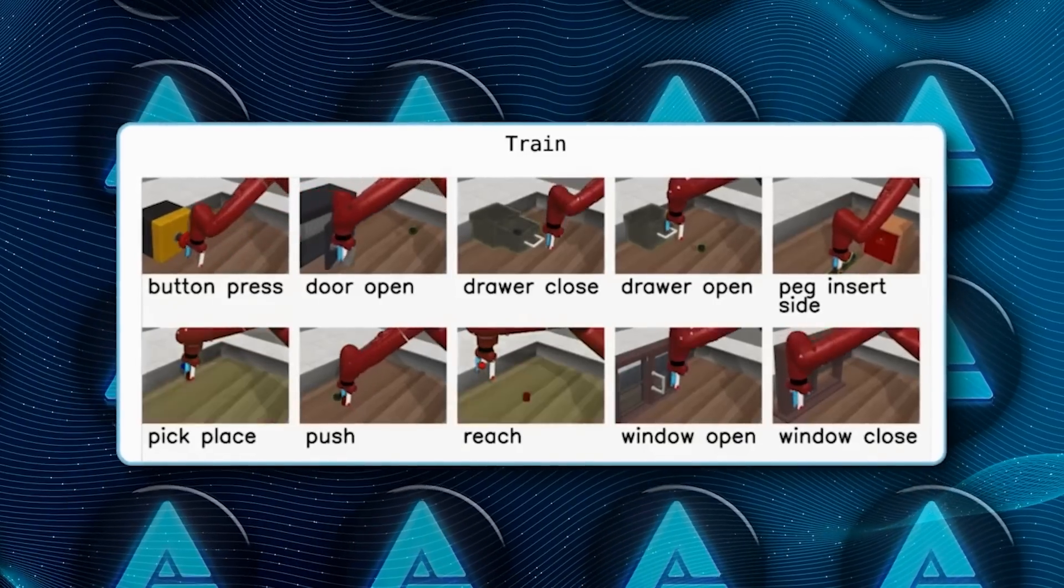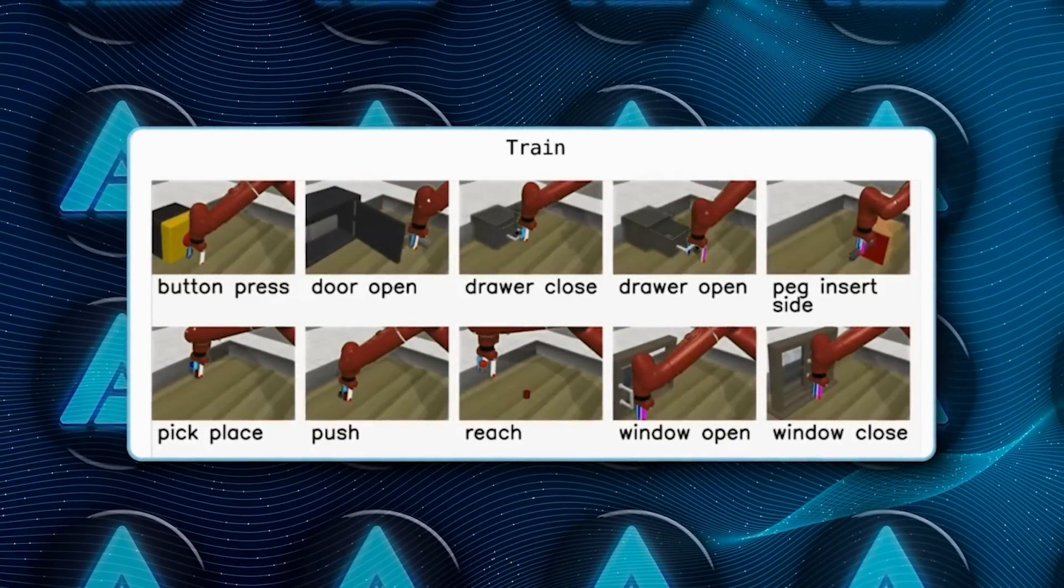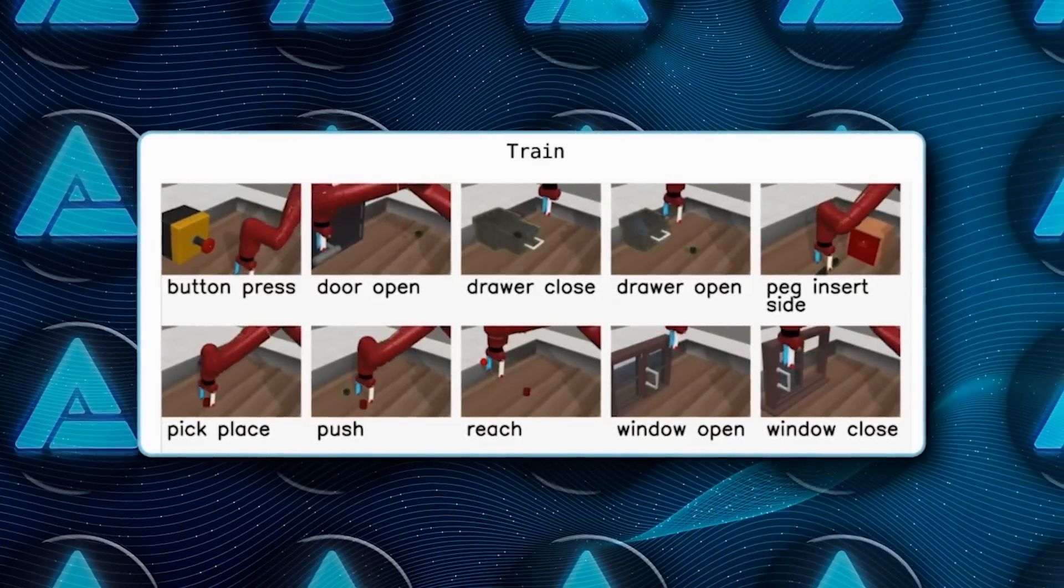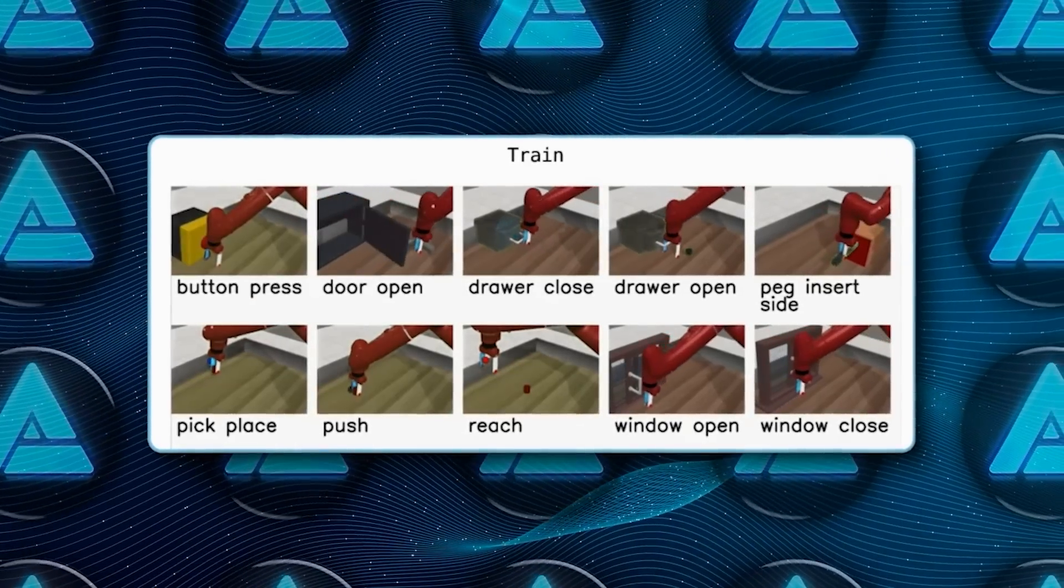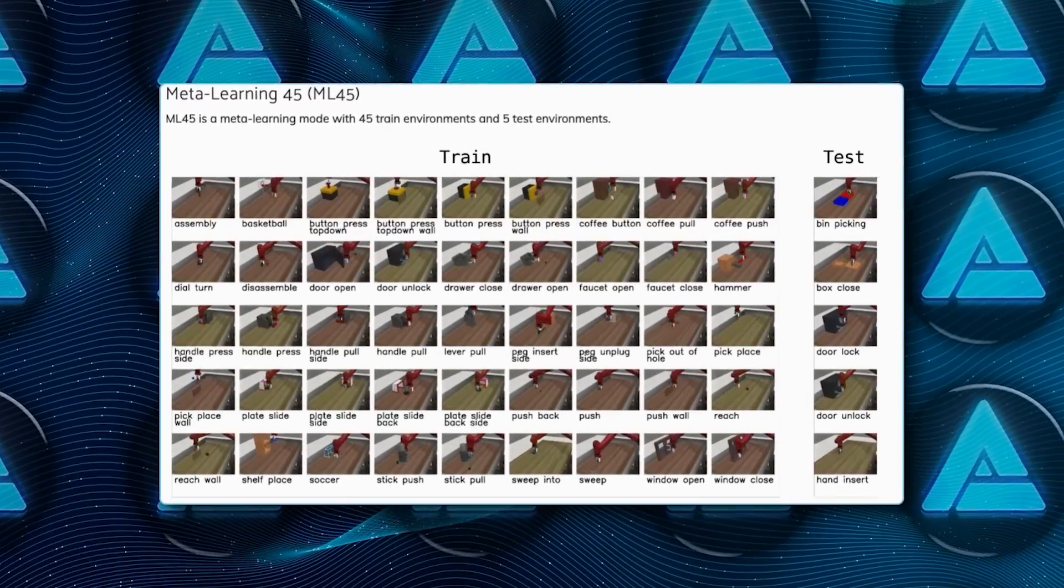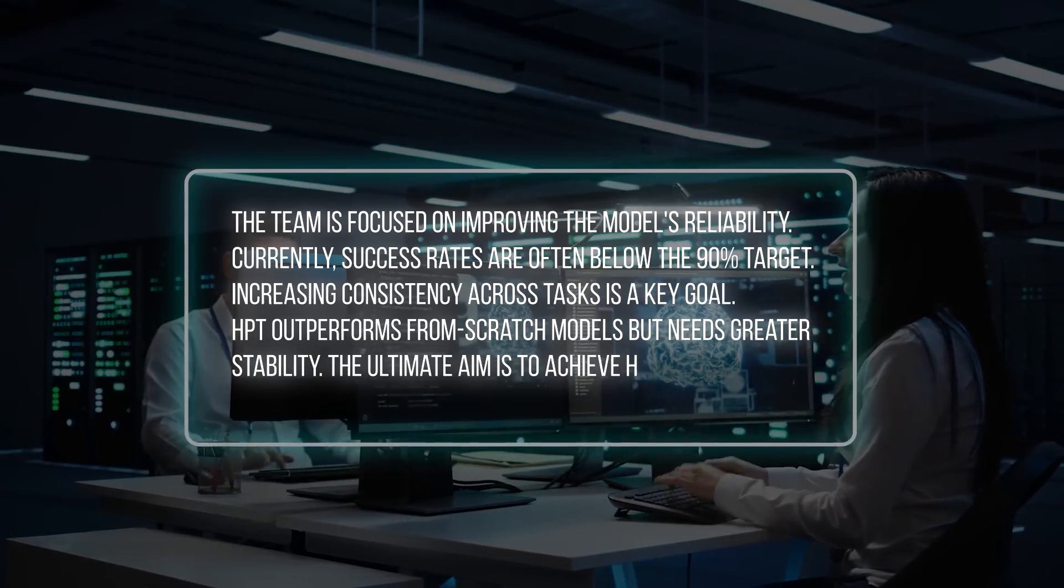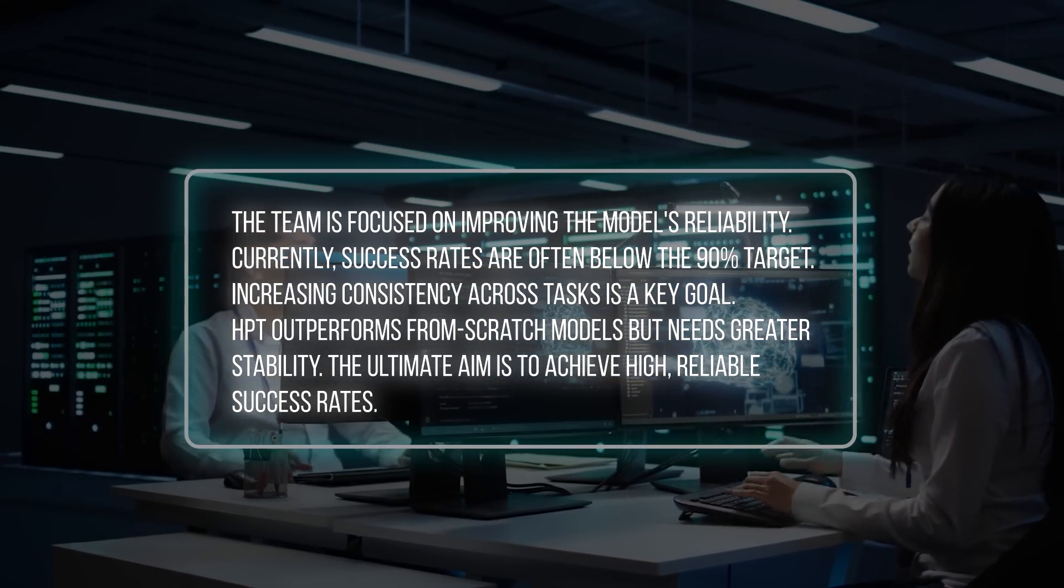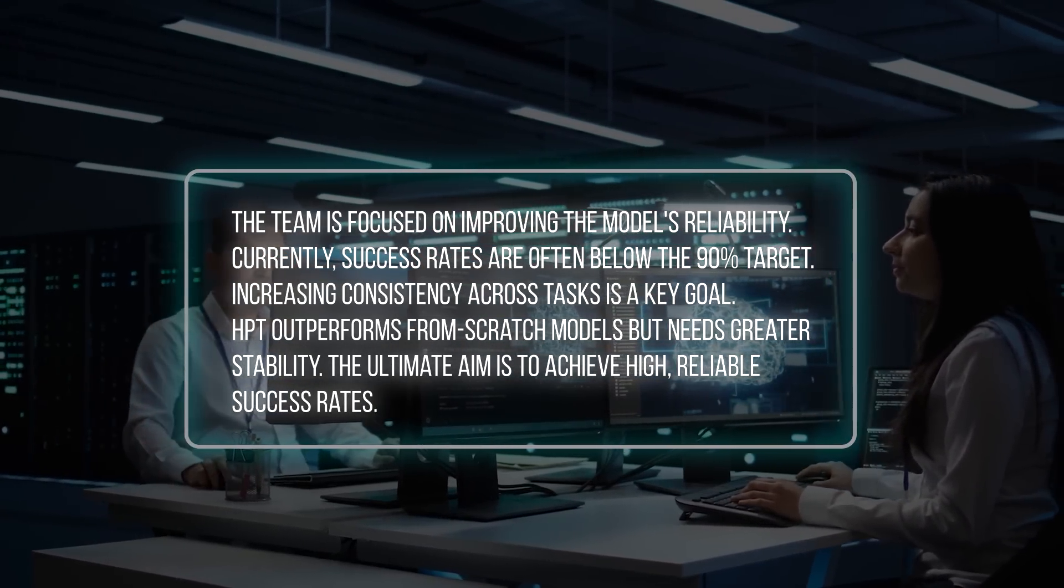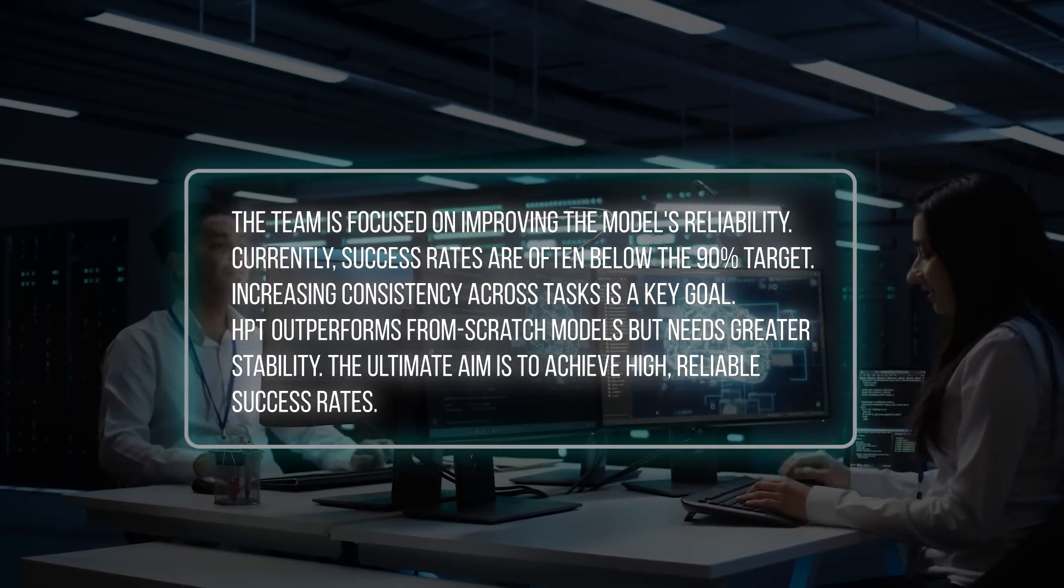But the team admits there's still work to be done. Right now, they're focused on short-horizon tasks, actions that are done in a few seconds or less. Expanding this to longer, more complex tasks is one of their next big goals. They also want to make the model more reliable since success rates aren't yet as high as they'd like, typically staying under 90%.